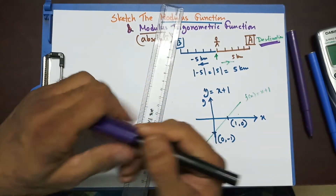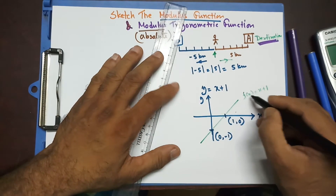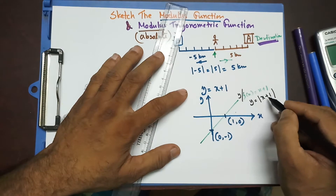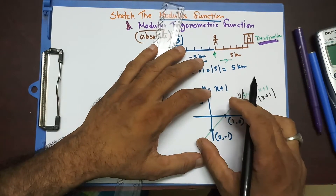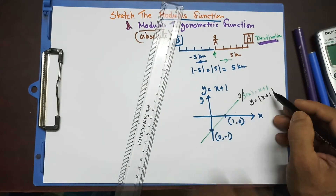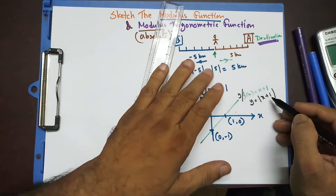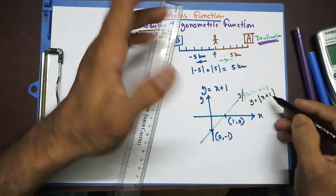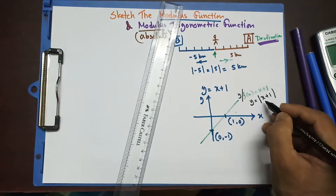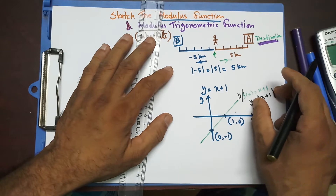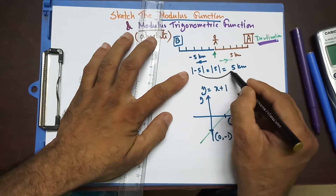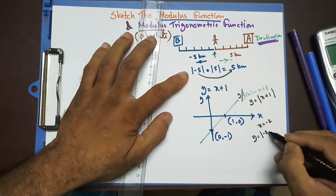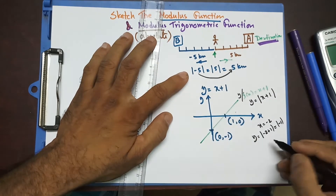Now, if we write y = |x + 1| — inside the modulus sign — what should this graph look like? The function cannot be negative because it always gives a positive value. For example, if X = -2, then -2 + 1 = -1, but taking the absolute value makes it 1. So Y will never be negative.